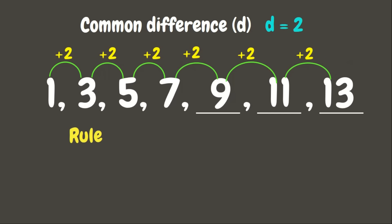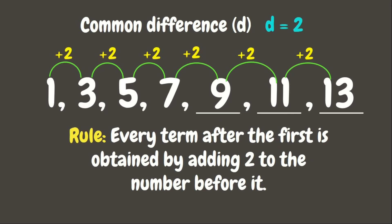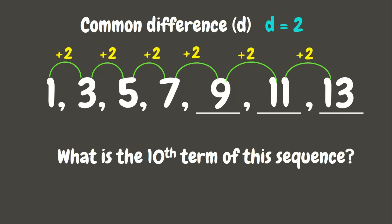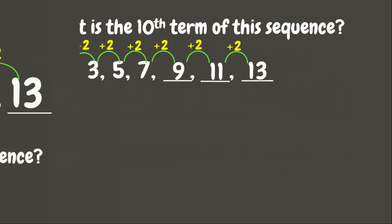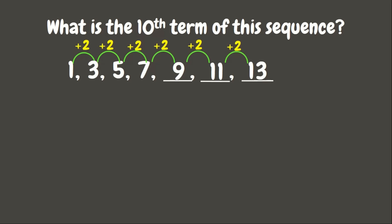We can generate a general rule: each term after the first is obtained by adding 2 to the term before it. But what if we are asked for the 10th term, the 50th, or the 100th term? Adding 2 repeatedly would take too much time. Let's formulate an nth term rule so we can easily solve for any term. We have the common difference of 2 and the values of our terms.